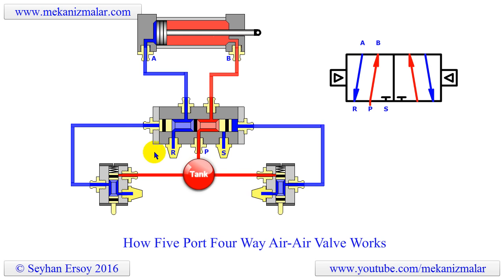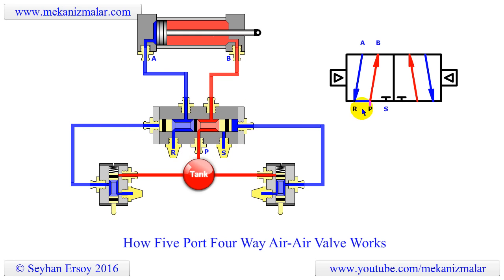It is a 5-port, 4-way, air-to-air operated valve. It is called this because there are 5 ports that can be used to make connections. The valve shown here has 1 port connected to the pressure source, 2 ports connected to the cylinder, and 2 ports reserved for exhaust. These ports are named as follows: Port P is connected to the pressure source, ports A and B are connected to the air cylinder, and finally R and S ports are connected to the atmosphere. The connections are also shown on the valve symbol on the right.